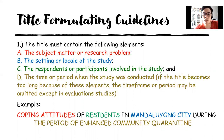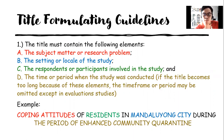The example used is: 'The coping attitudes of residents in Mandalorian City during the period of enhanced community quarantine.' The subject matter is coping attitudes, the setting is Mandalorian City, the respondents are the residents, and the time or period is the period of enhanced community quarantine. When we say subject matter, that is the main focus of your study. Setting means location or place. Respondents means the people involved in the study. For time or period, you can describe the period, the school year, or the date.